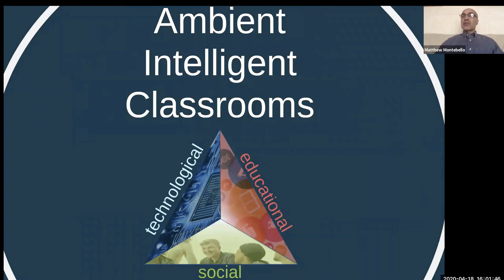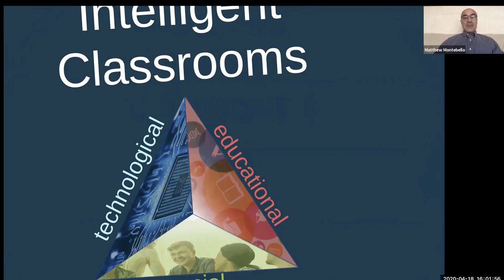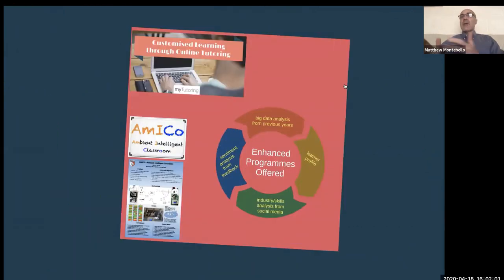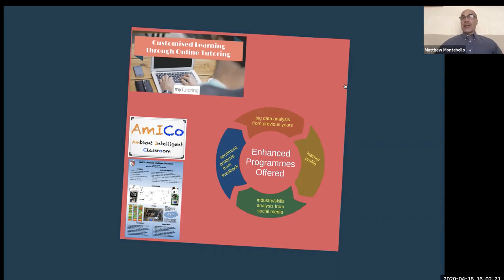Moving on to the second aspect, which is most important to create the ambient intelligent classroom: the educational aspect. In the case of education it is quite obvious — we're talking about a classroom where teaching and learning take place. Education is an essential and indispensable part that cannot be ignored, as we are talking about a classroom.